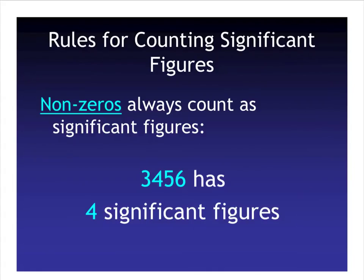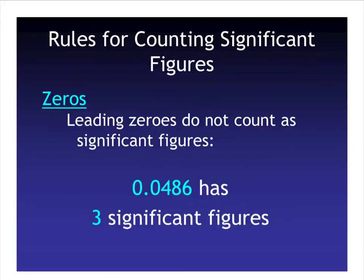Here are rules for counting significant figures. First, non-zeros: anything that is not a zero is always going to count as a significant figure. For example, 3,456 has four significant figures — every single one of these numbers is significant because they are non-zeros. Now when it comes to zeros, this is where it gets tricky. Leading zeros — zeros to the left of anything that is non-zero — do not count as significant figures. So in that example, the first significant figure would be the 4, giving us three significant figures.